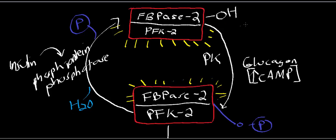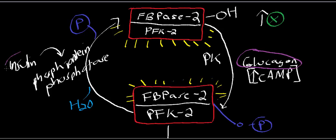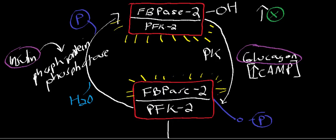Conversely, when the bifunctional enzyme is not phosphorylated — in other words when phosphoprotein phosphatase has been activated — the PFK2 activity is dominant. You have high levels of fructose 2,6-bisphosphate, which binds to PFK1 and activates it, giving you stimulation of glycolysis and inhibition of gluconeogenesis. The ultimate control of glycolysis and gluconeogenesis is controlled by the relative amounts of insulin and glucagon.